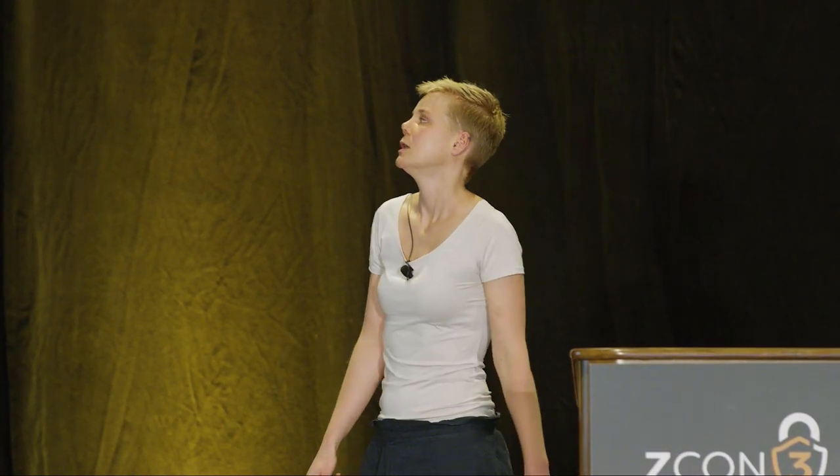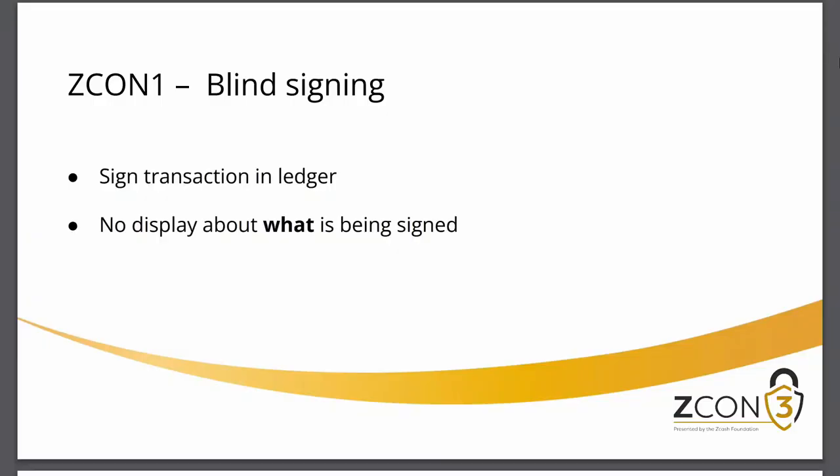However, he was only able to get the Ledger to blindly sign signatures. Blind signing means the hardware wallet signs the transaction without displaying any information on the device screen for you to check. Your keys are safe and never leave the device, but you could still be tricked into signing a malicious transaction, because all the information you see is displayed on the host machine, which could be compromised. So there's room for improvement.